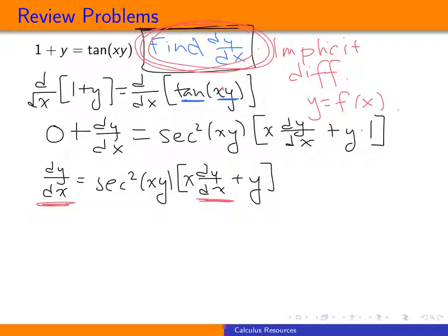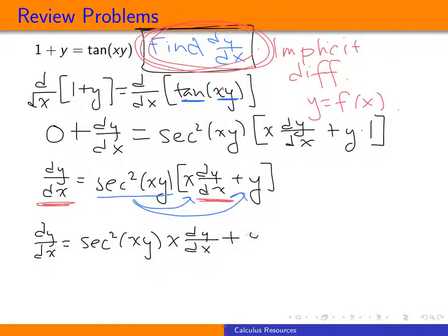My first hurdle in being able to solve for dy dx is the secant squared x y. So what I'm going to do is distribute it to both terms. So my equation now becomes dy dx is equal to secant squared x y times x times dy dx plus y times the secant squared of x y.